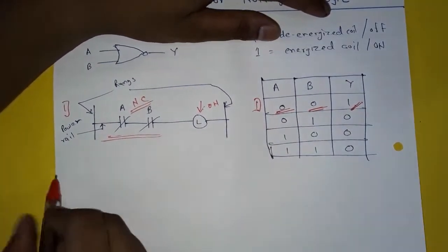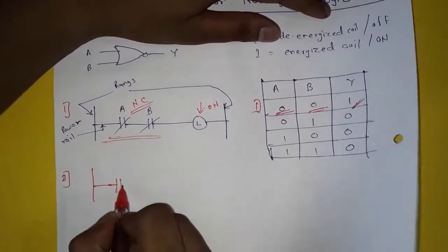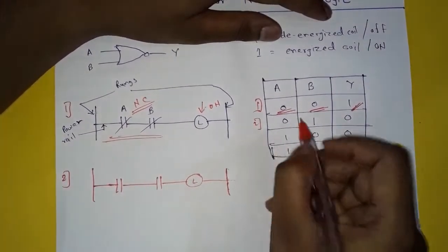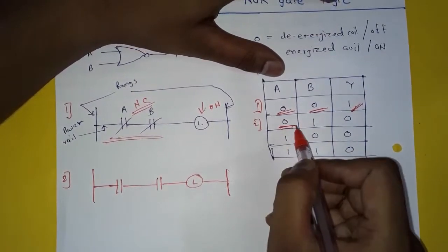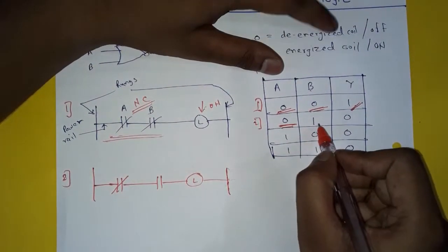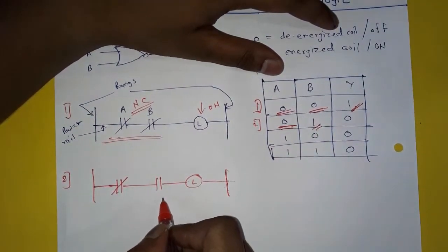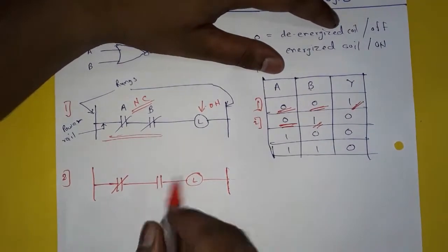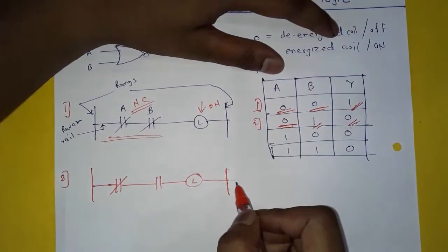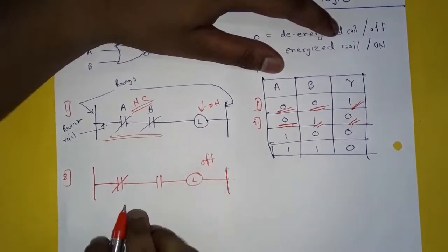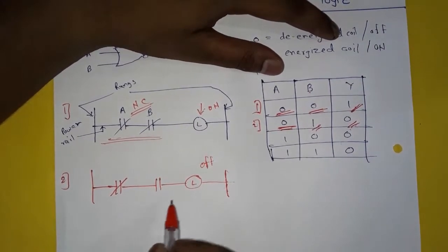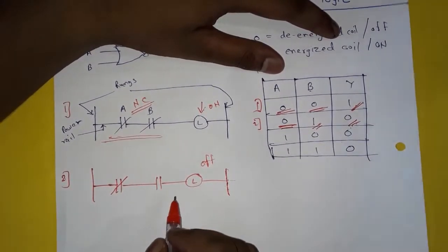In the second condition, A is de-energized and off, so it remains closed. B is energized, so it is on — because it is on, its contacts get open. So Y equals zero, that is the lamp will not glow. Because the two switches or control relays are connected in series, even if only one remains open, the lamp will not glow.